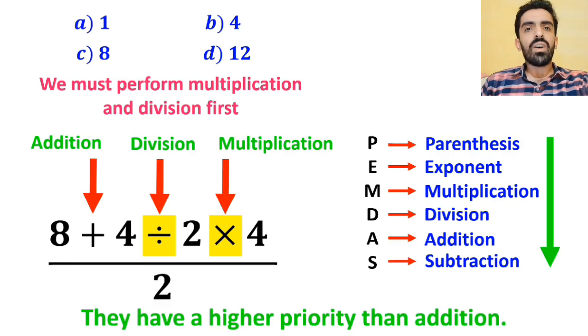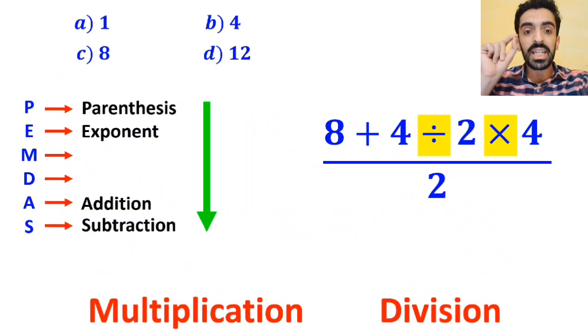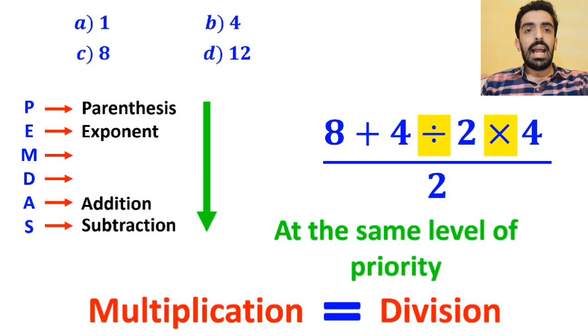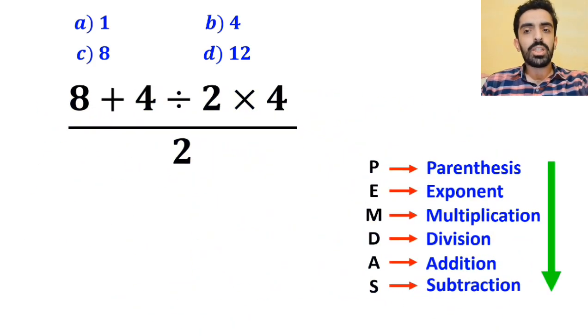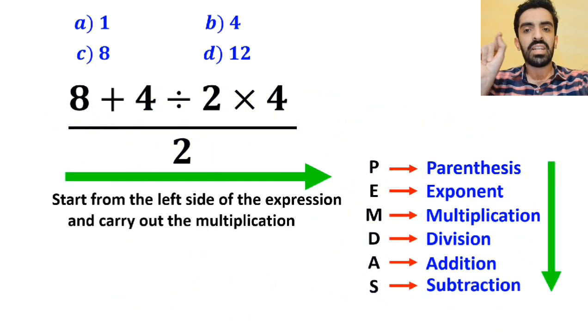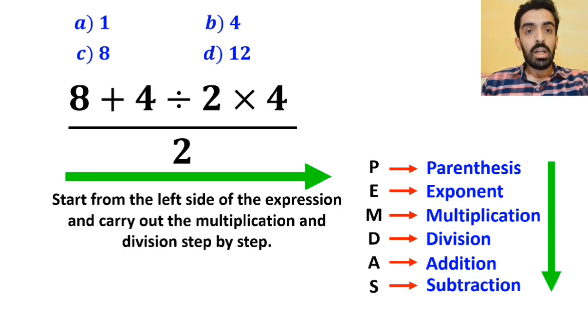However, it's very important to remember that multiplication and division are at the same level of priority. In this case, the best thing to do is to start from the left side of the expression and carry out the multiplication and division step by step.